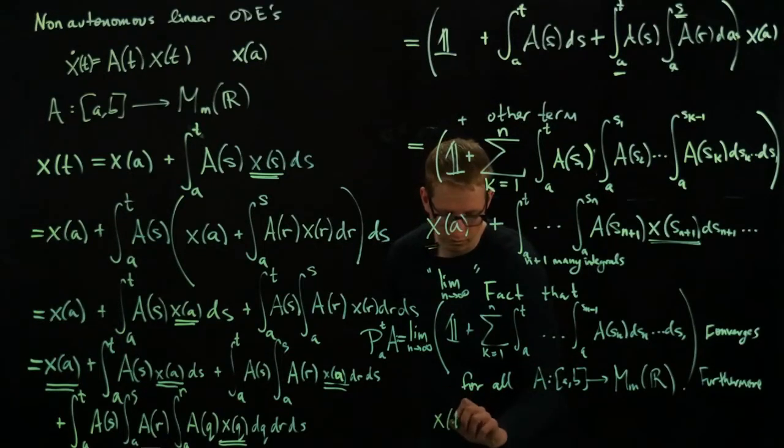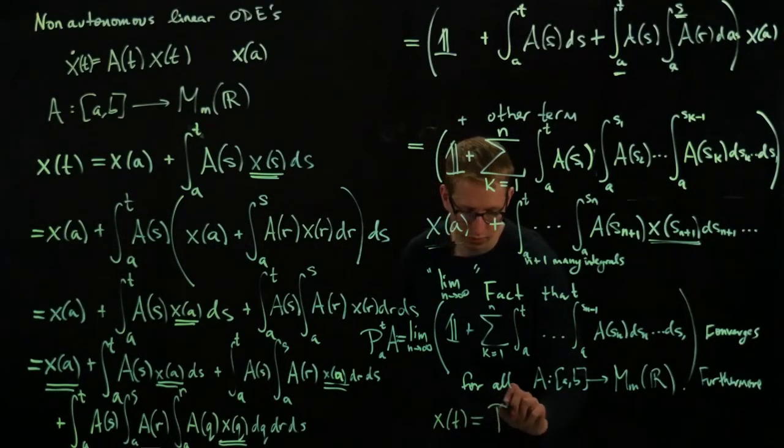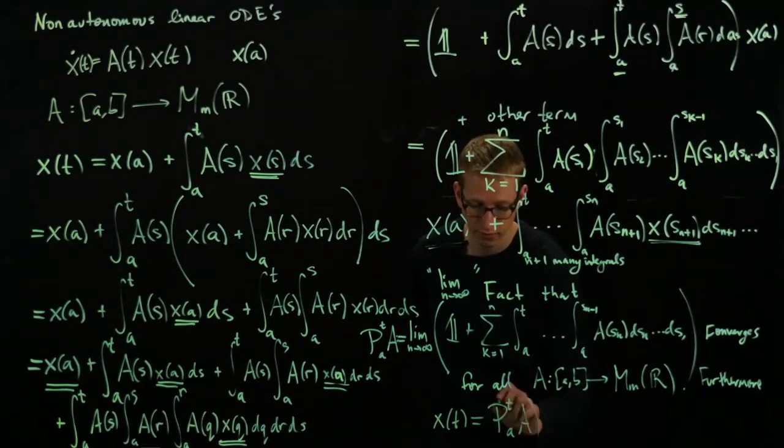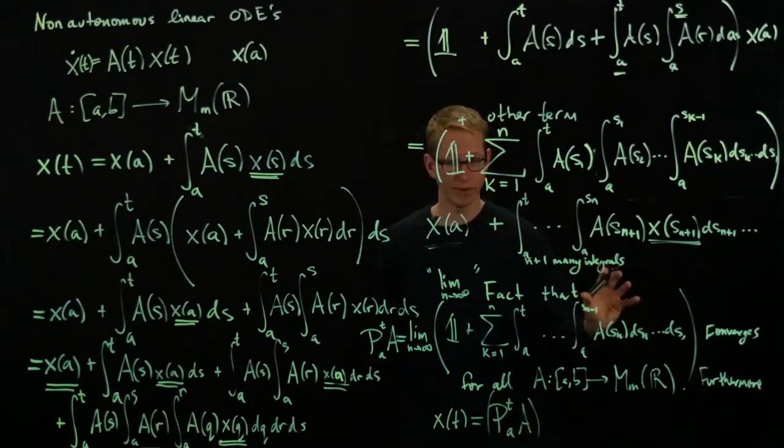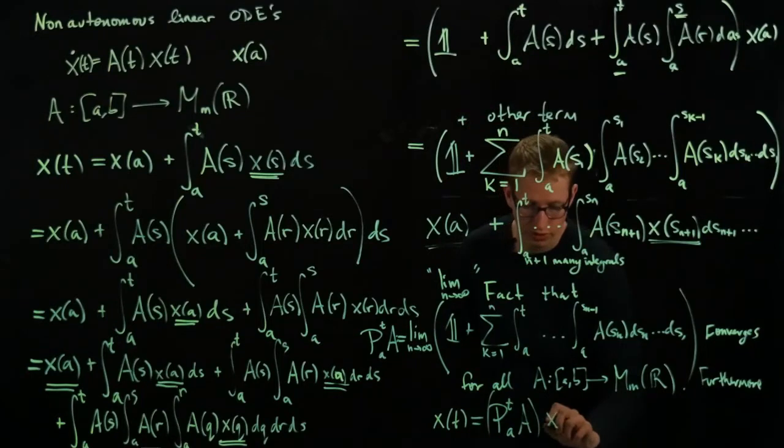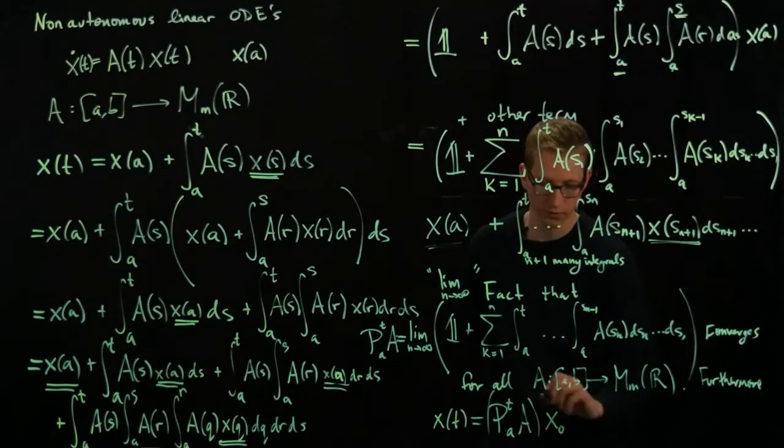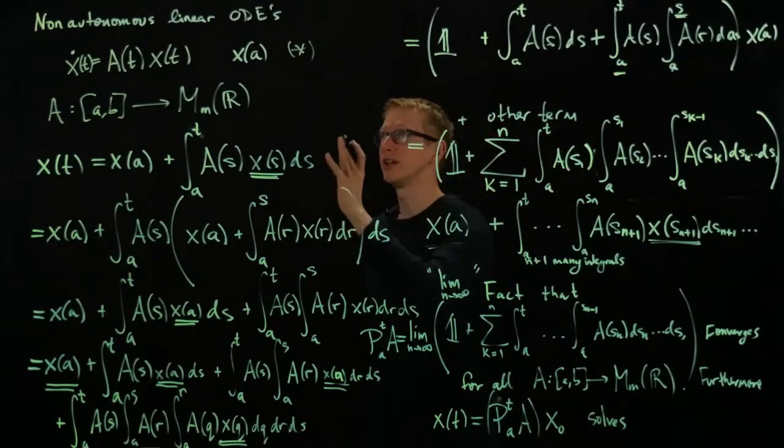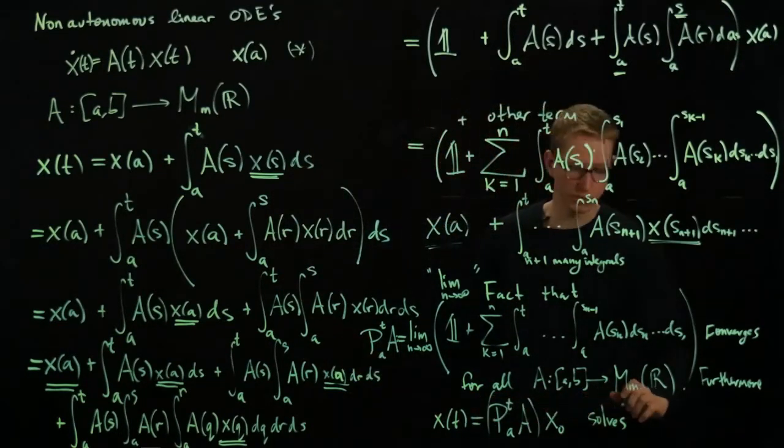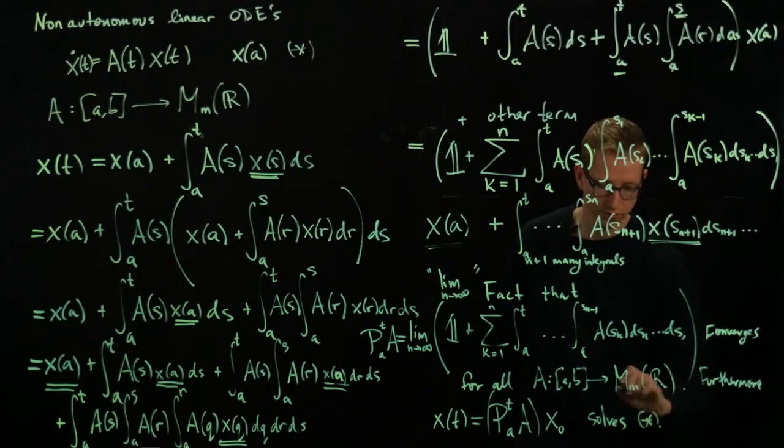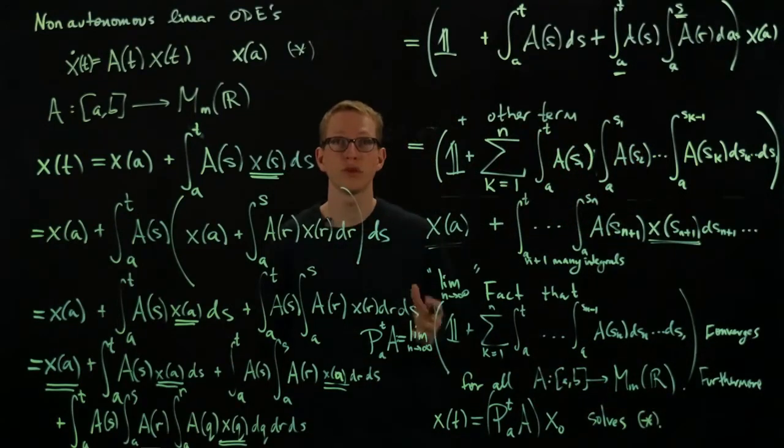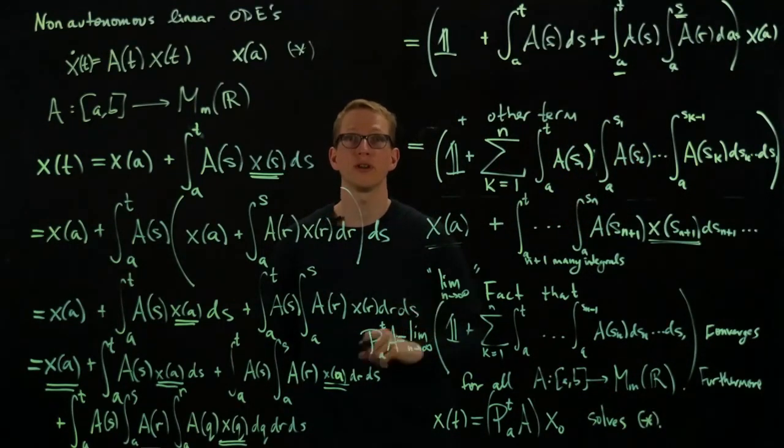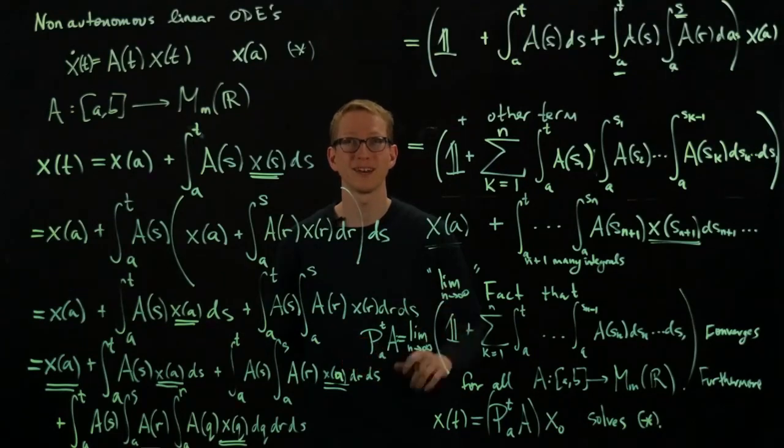x of t is the time-ordered exponential of A. That's going to be an m by m matrix applied to our initial condition. And this actually solves our linear non-autonomous ODE. And if you thought calculating the exponential of an ordinary matrix was difficult, try calculating this.